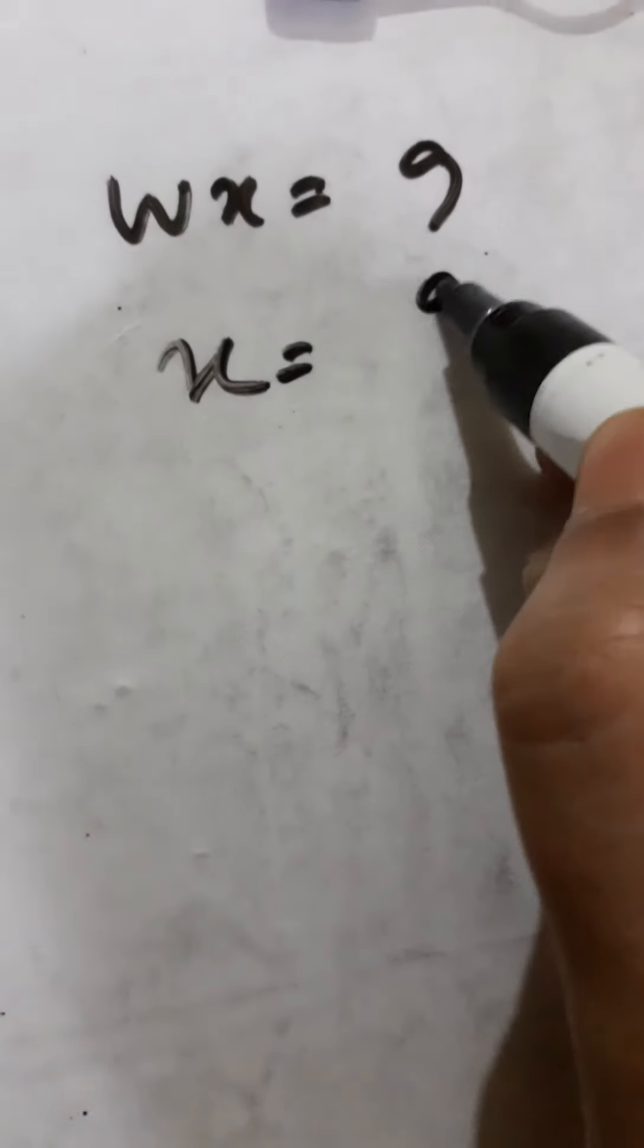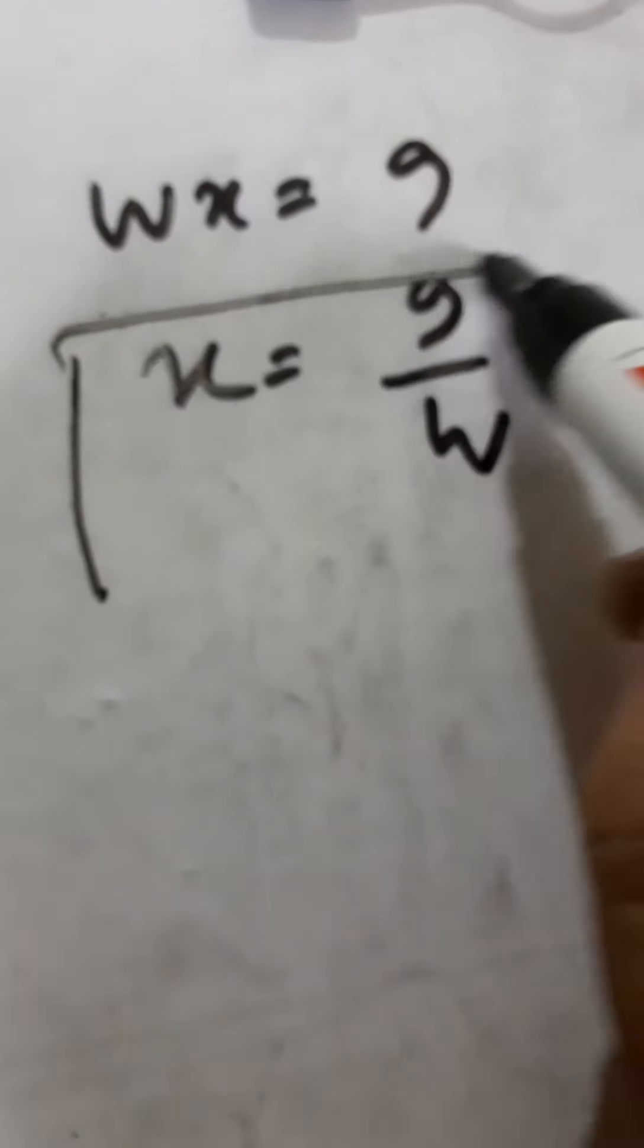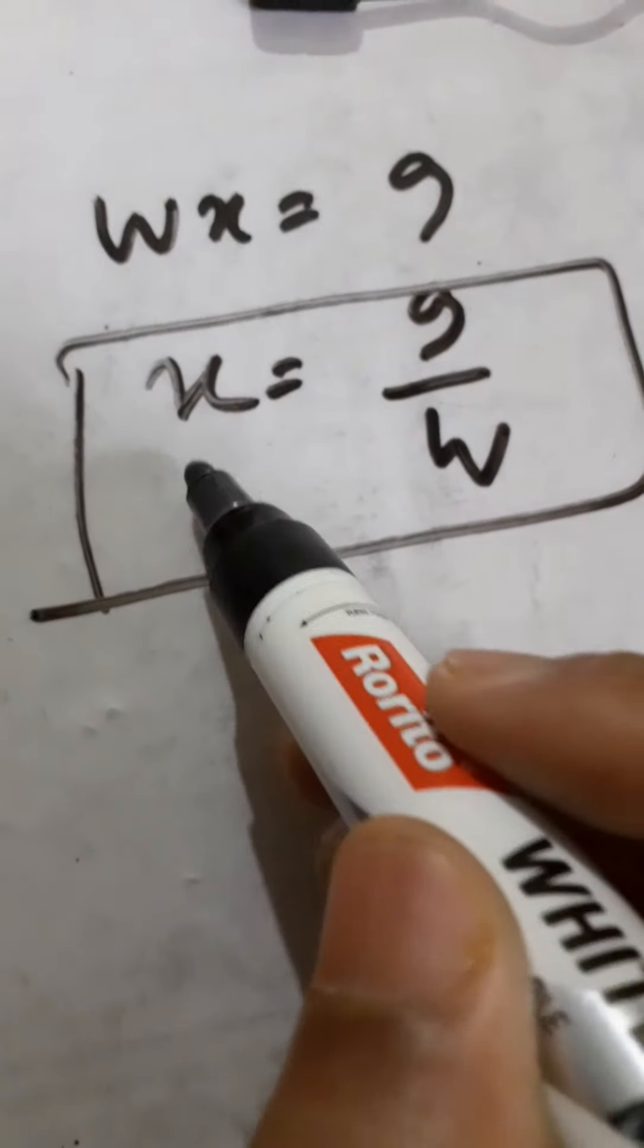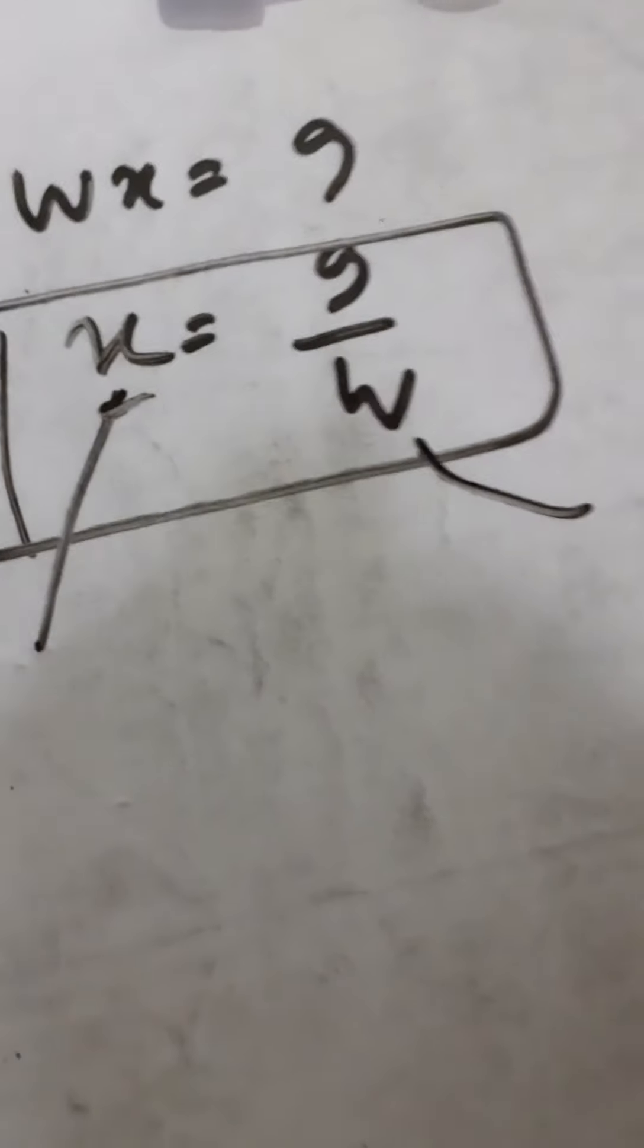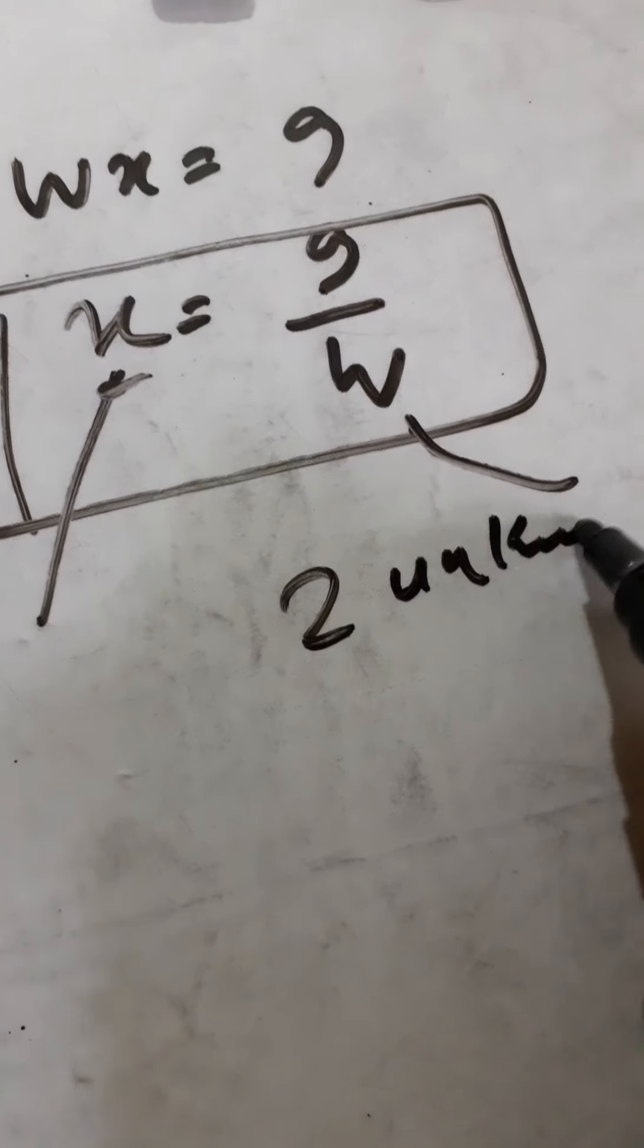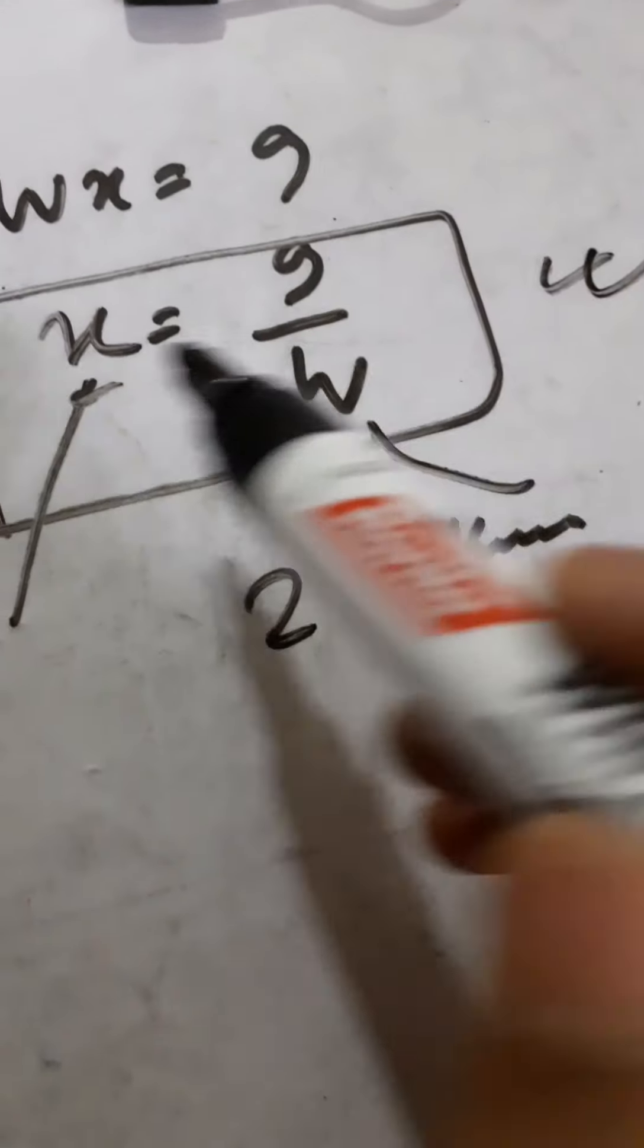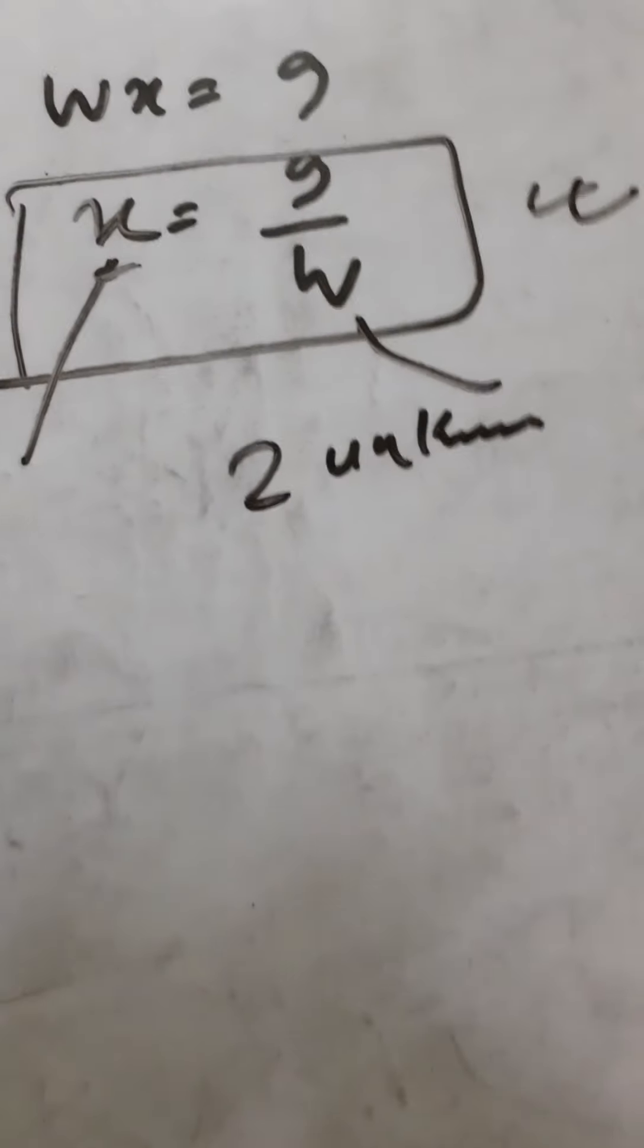So in this type of problem where two unknowns are there - we don't know the distance and we don't know the load - so with two unknowns, we express one unknown in terms of the other unknown. That's how we get our answer.